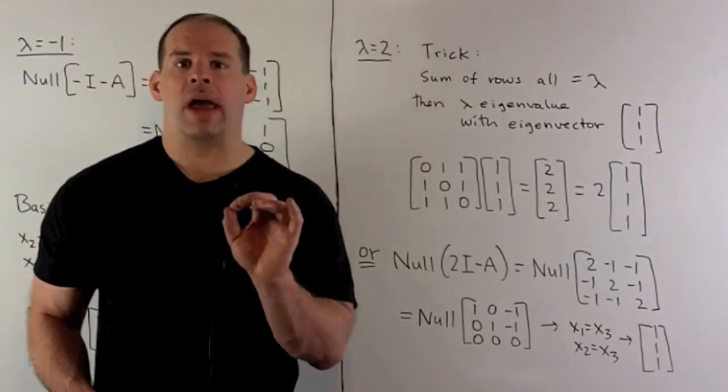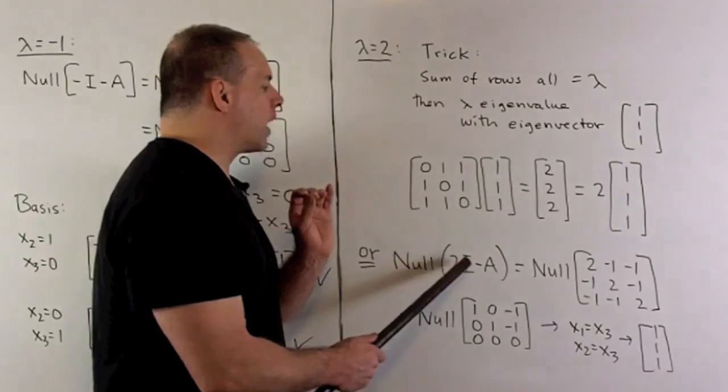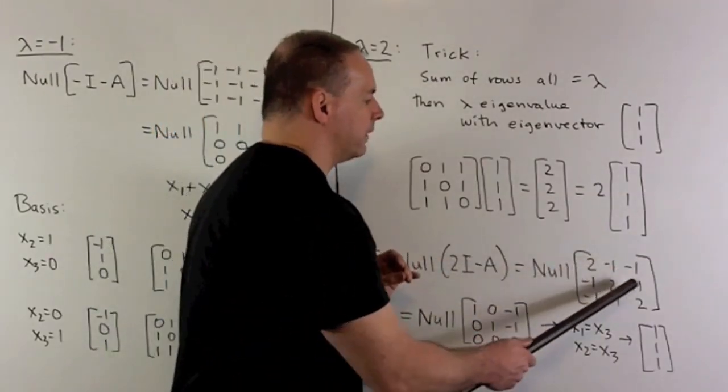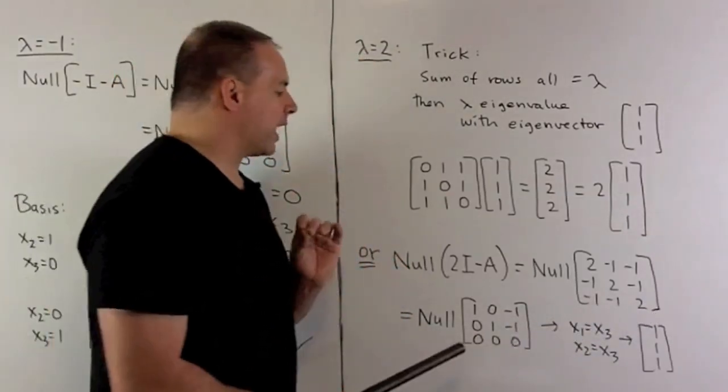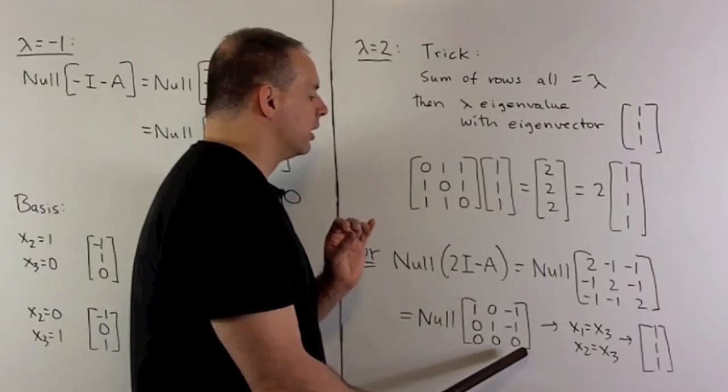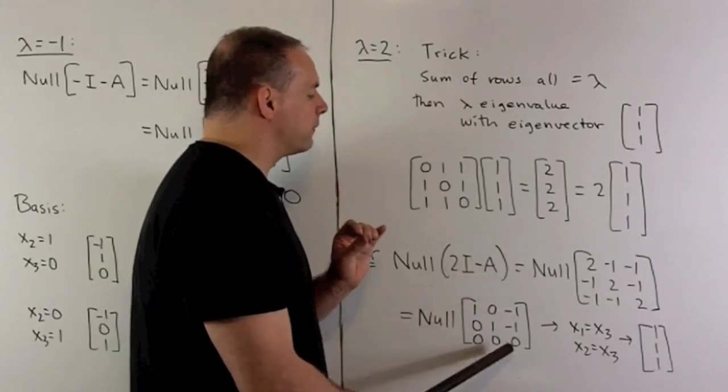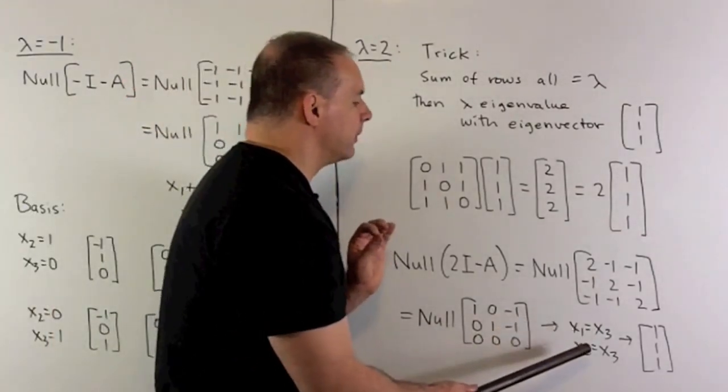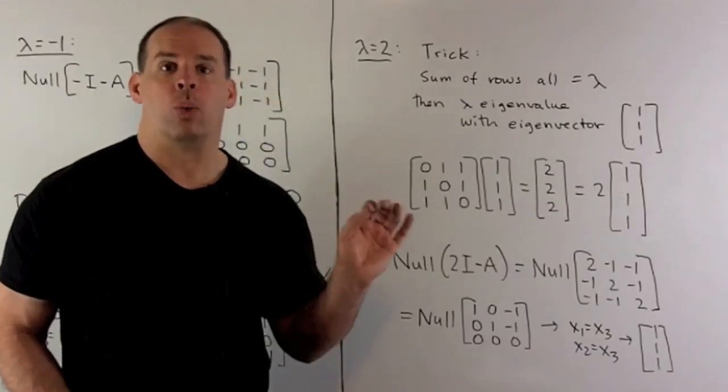Now, we can find that the long way and we'll get the same answer. So if I take the null of 2I minus A, we're looking at the matrix 2 minus 1 minus 1. You fill in the rest. We can reduce that. In reduced row echelon form, I'm going to have 1, 0 minus 1, 0, 1 minus 1, and then all zeros. So, here, we have two pivots. So that means one free variable. So x3 is going to be our free variable. So we'll have x1 equals x3, x2 is equal to x3. If I let x3 be equal to 1, we get back our vector 1, 1, 1.